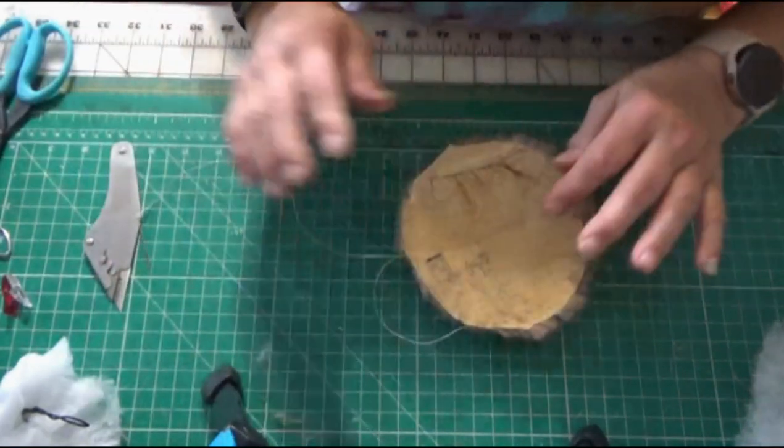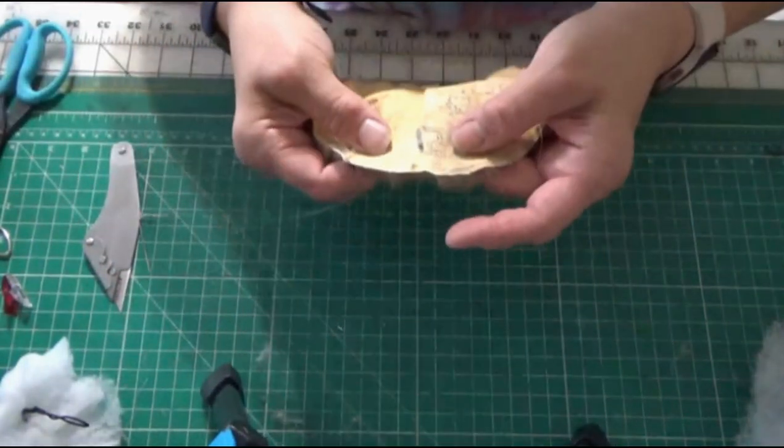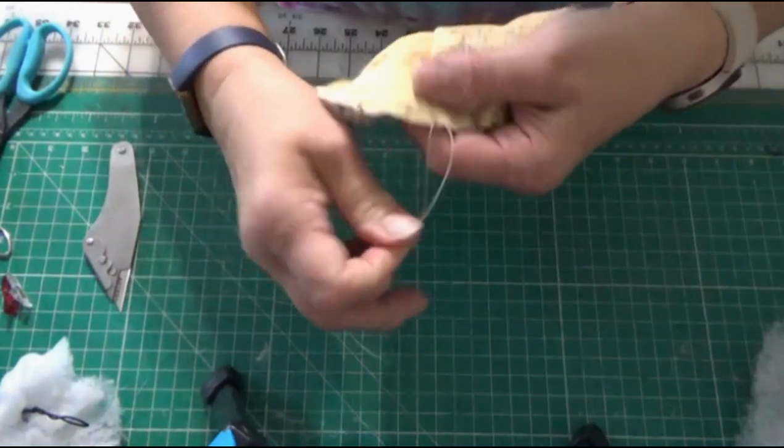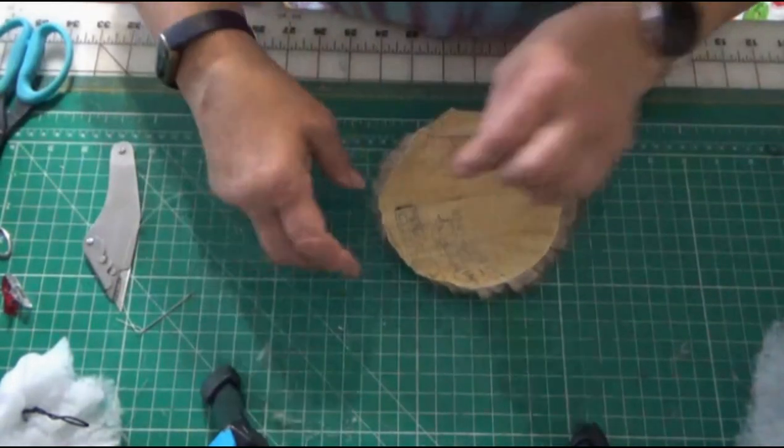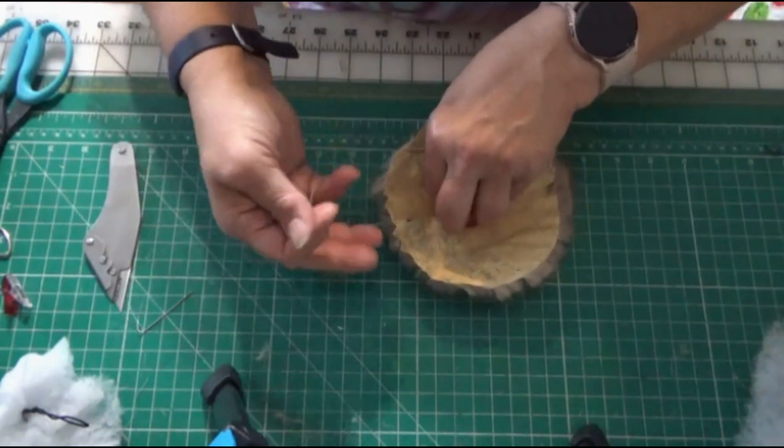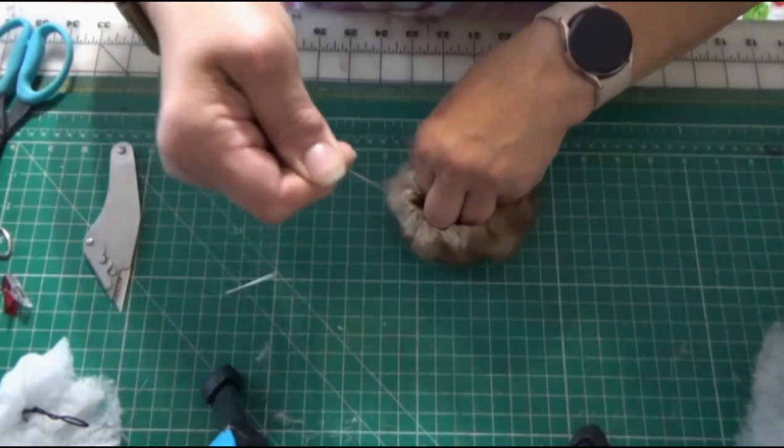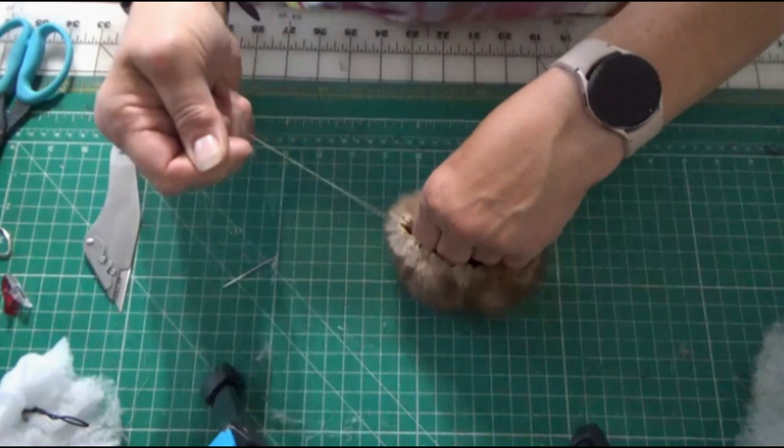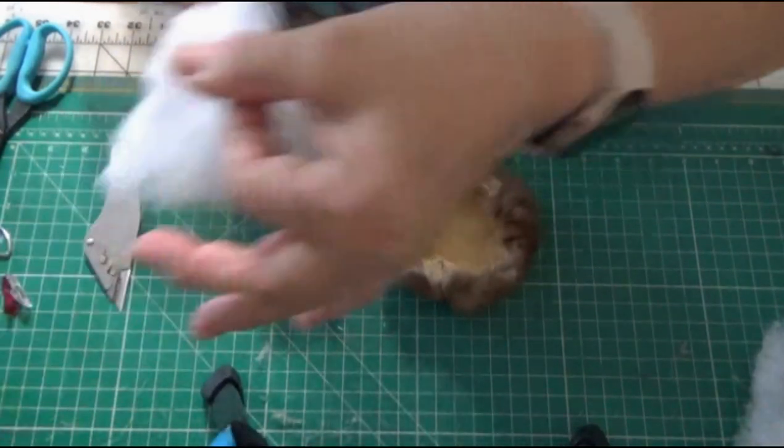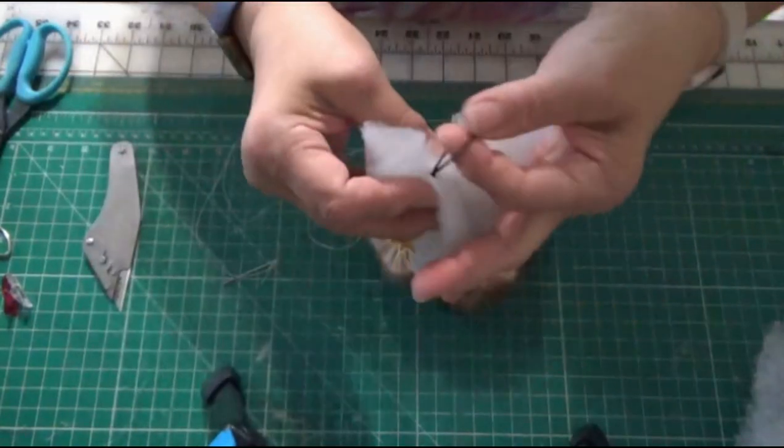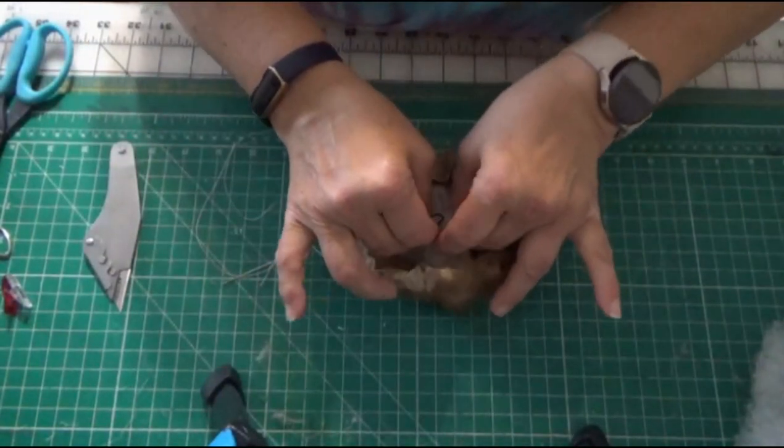So now I have reached where the other part of the thread is. I am going to put my fingers in the center and start to gently pull on the string. Now it is going to create a pocket in there, so I am going to take my polyfill and put it inside the pocket.